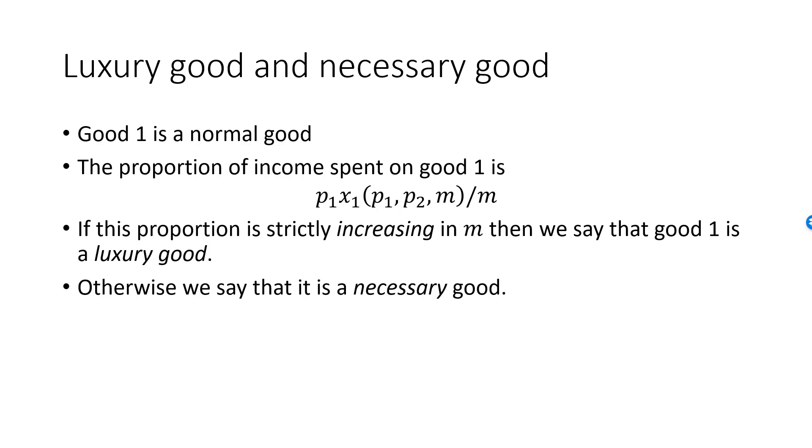Consider for example food and travel. Let's say that your income is doubled. It's likely that you would now spend more on food, making food a normal good. However, it is unlikely that your spending on food will double, making food a necessary good.